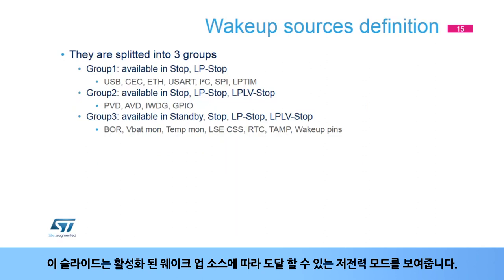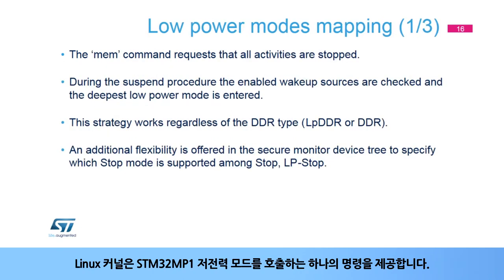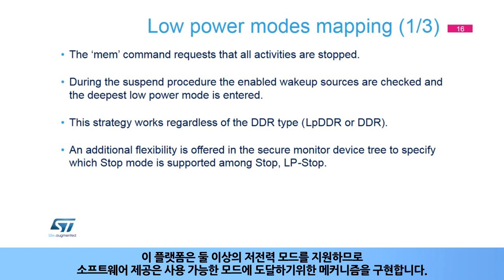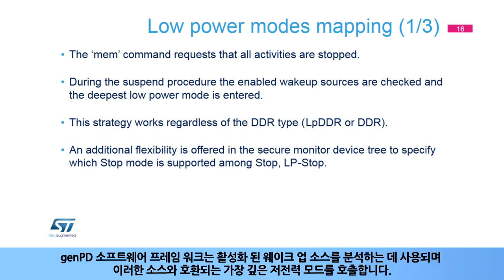This slide shows which low power modes can be reached depending on the enabled wake-up source. It is the responsibility of the GEN-PD framework to ensure consistency between the enabled source and the low power mode. The platform supports more than one low power mode, so the software implements a mechanism to reach the available modes. The GEN-PD software framework analyzes which wake-up sources are enabled and then calls the deepest low power mode compatible with those sources.